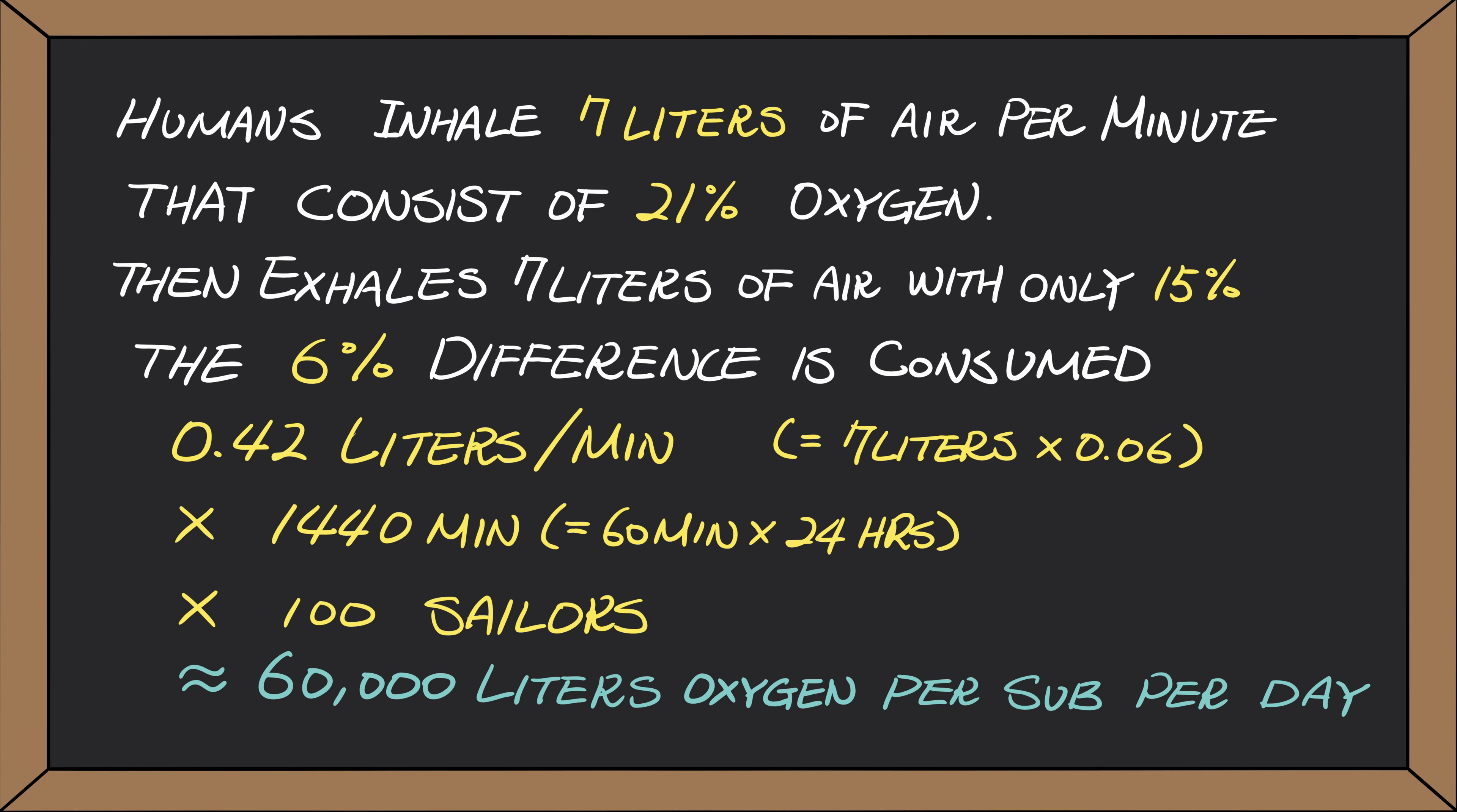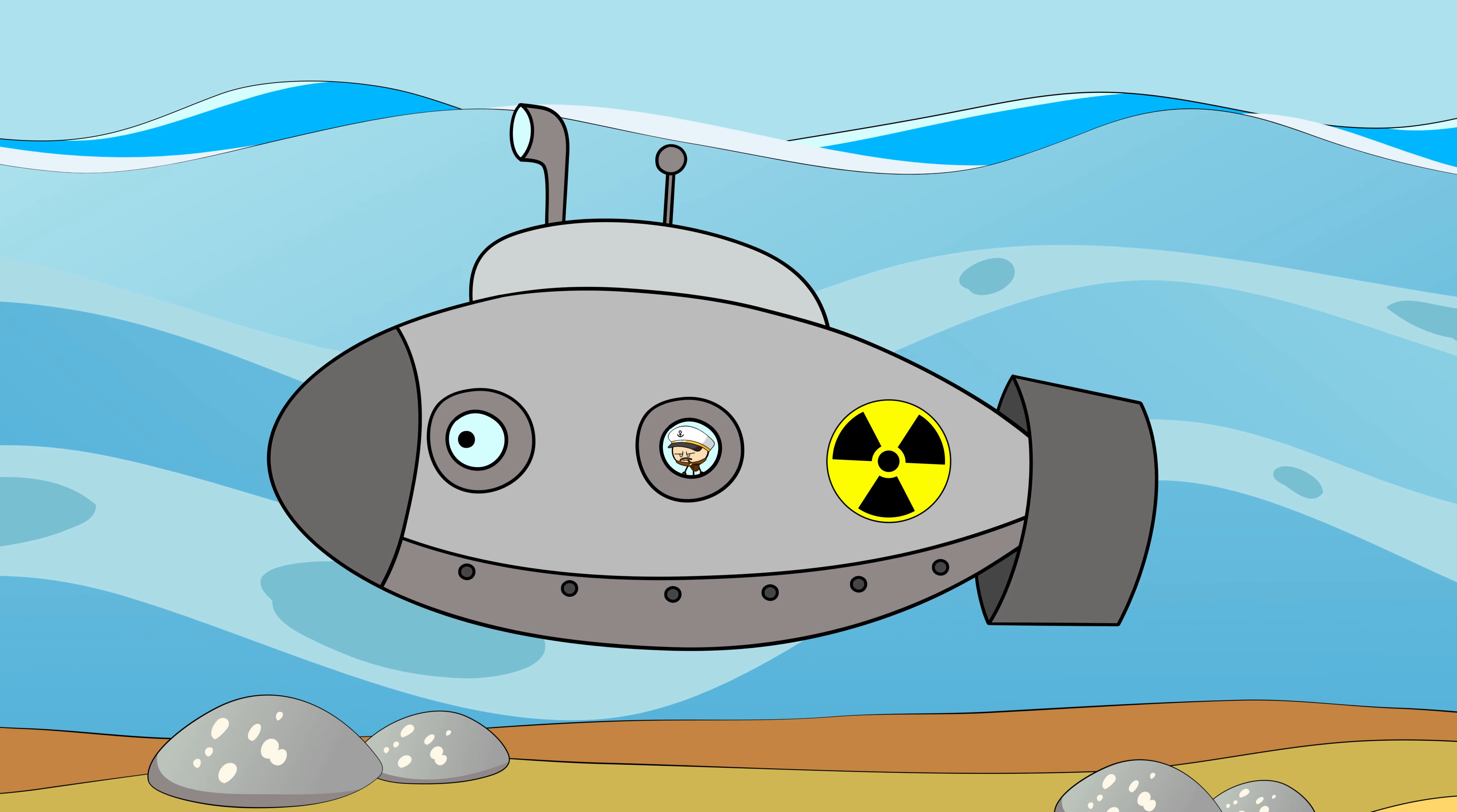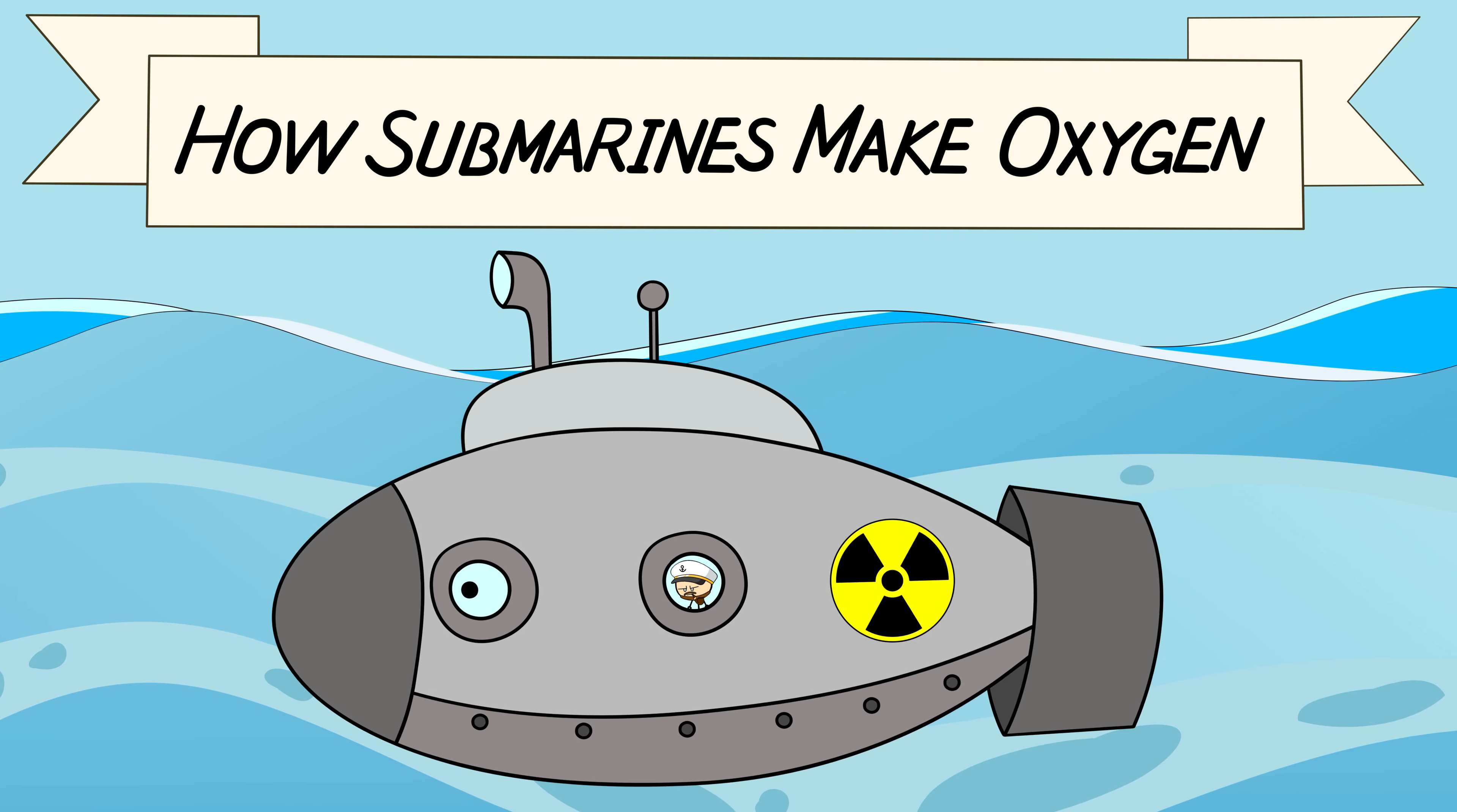That's certainly a lot of oxygen if you're holed up in a metal tube underwater, especially on a nuclear submarine, since the whole point of a nuclear sub is to stay hidden underwater for as long as possible, months at a time even. Which begs the question, how do submarines produce oxygen and stay underwater?